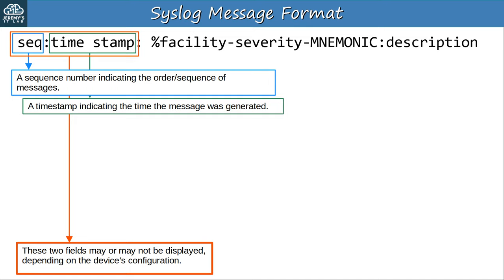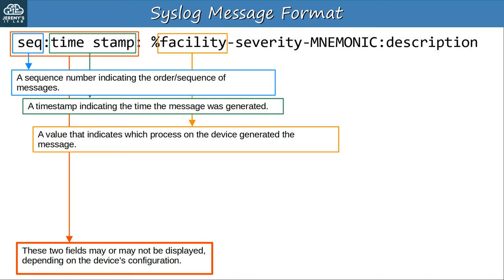Note that the sequence number and timestamp fields may or may not be displayed depending on the device's configuration. Sequence numbers are often not used; however, timestamps are very important and I highly recommend including them in syslog messages. Next there is the facility — this is a value that indicates which process on the device generated the message. For example, if OSPF generated the message when an OSPF neighbor came up, OSPF would be displayed in this field.